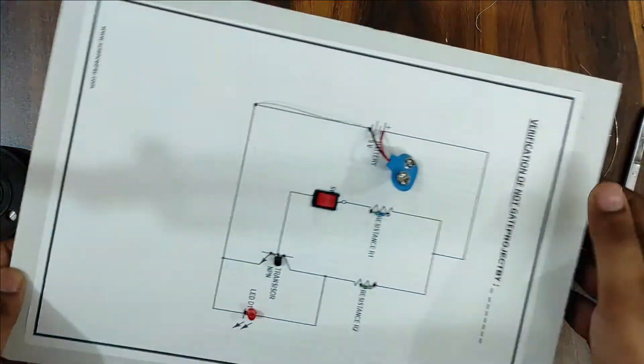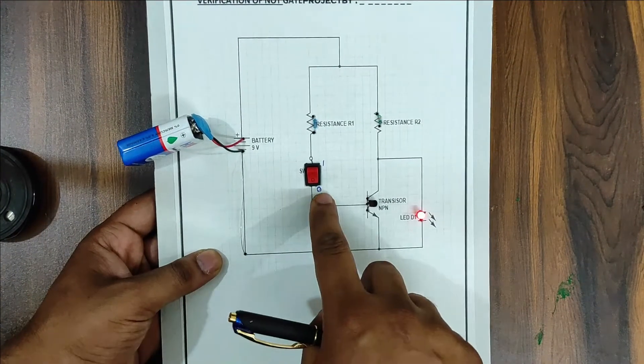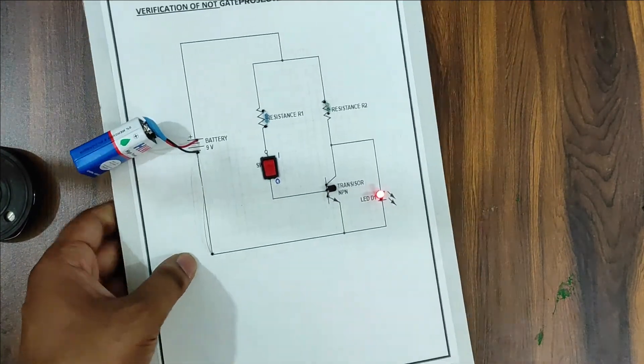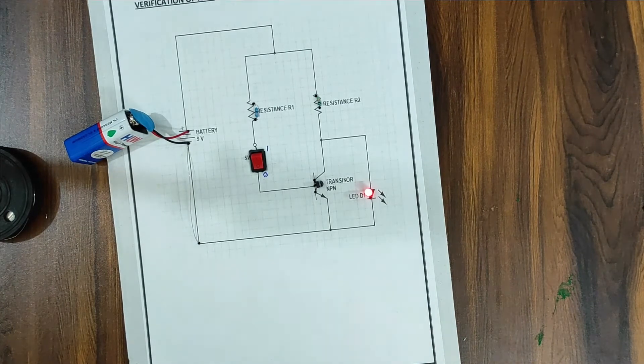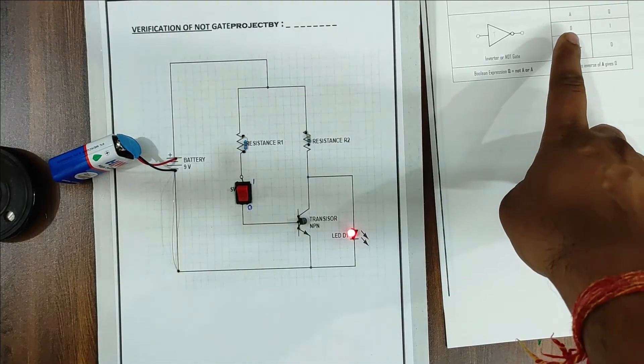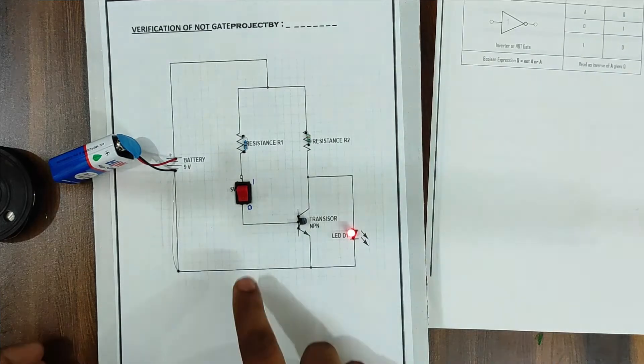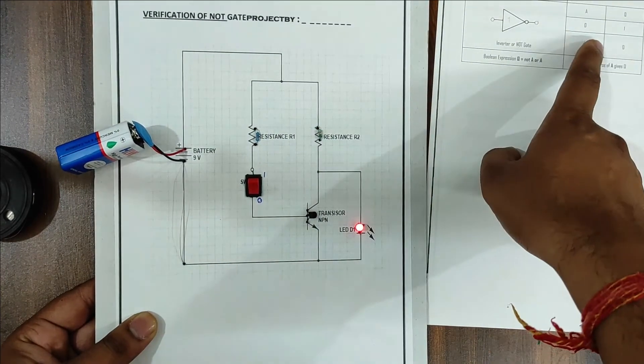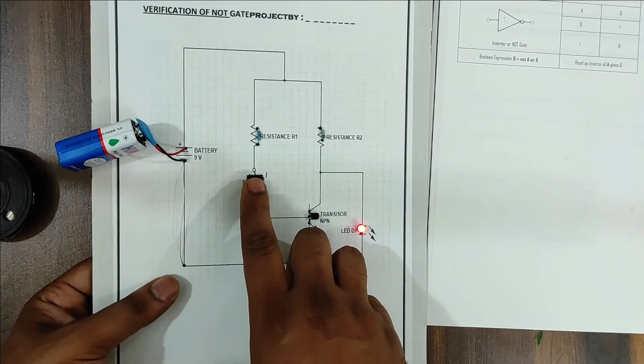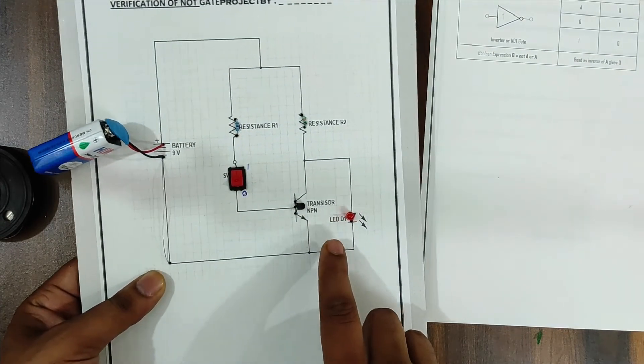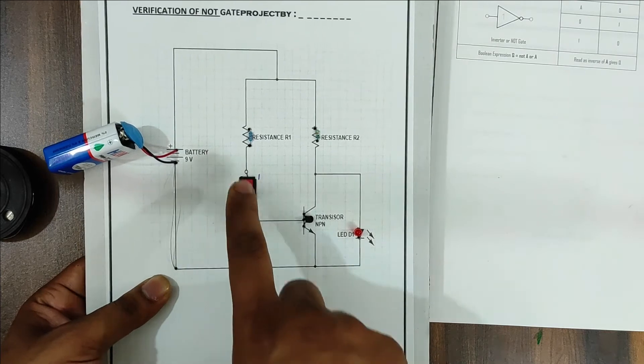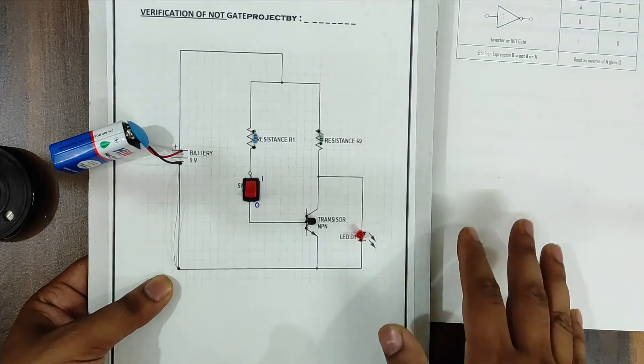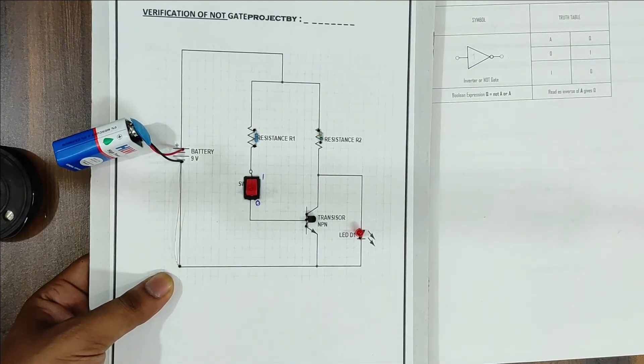Now we have to verify the truth table. This is zero and this is one. When we have signal low then output is one. When signal is low, output is one. Then we will make it high, then output is low. Signal high, output is low. So we have verified the truth table of the NOT gate.